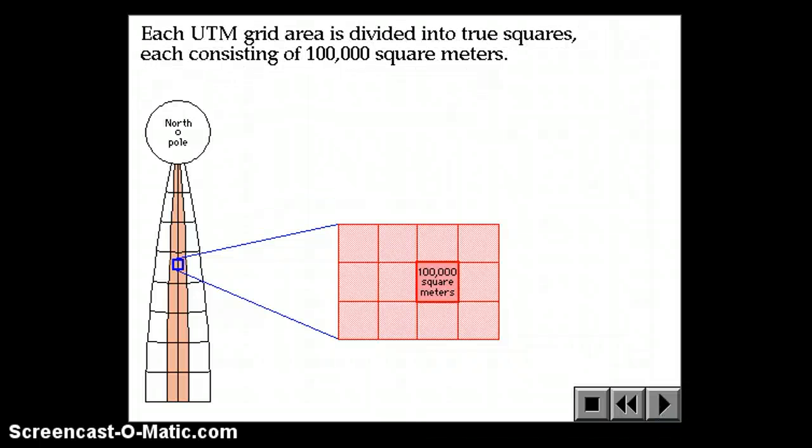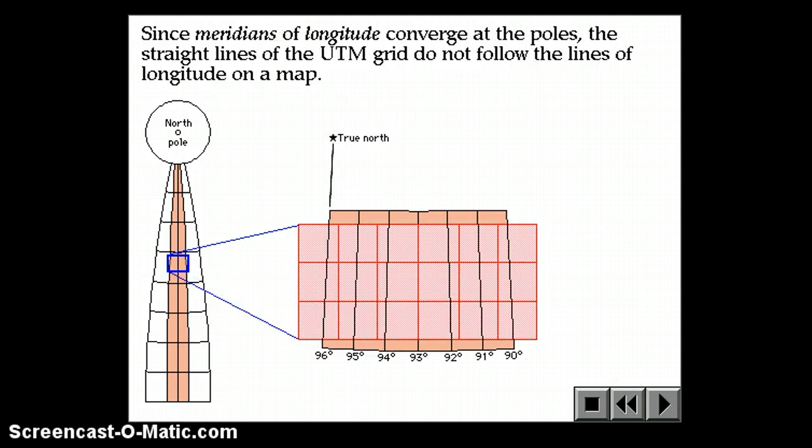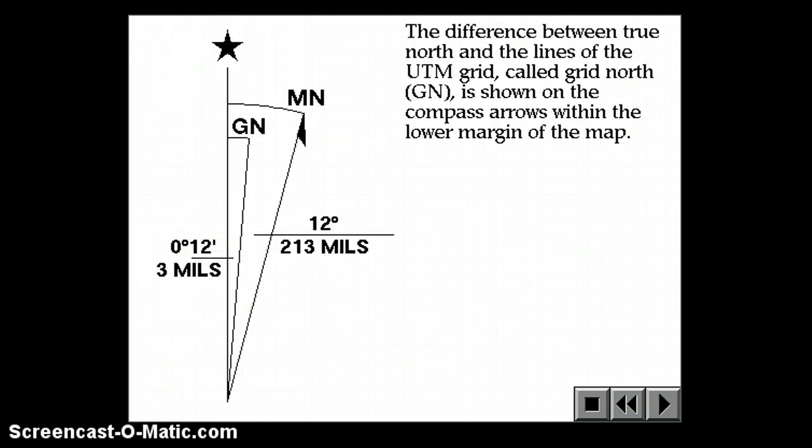But if you're not doing that, then it's a little bit of a cumbersome system. So each grid is 100,000 square meters, and they overlap with latitude and longitude in this way.